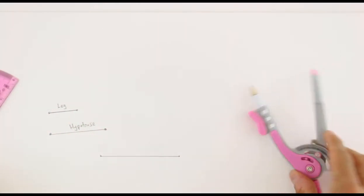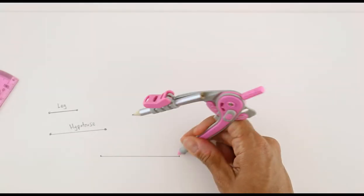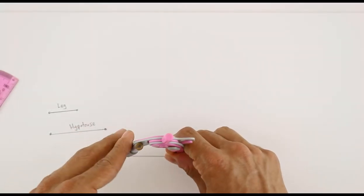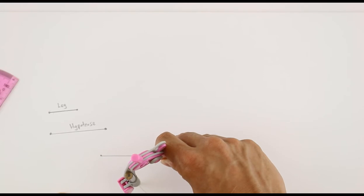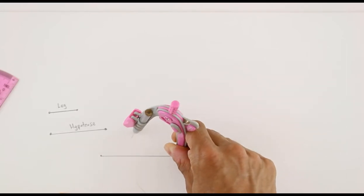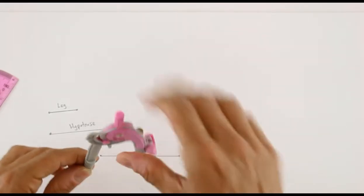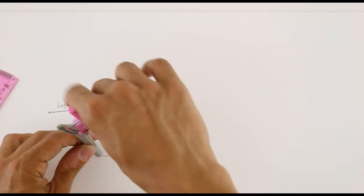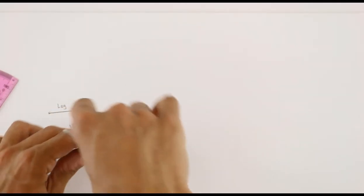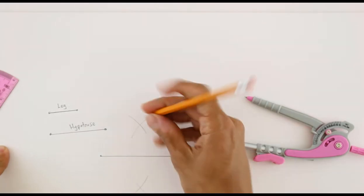I can start by constructing a random segment. I would go ahead and make it a pretty decent size length and construct the segment bisector of that segment. Of course, the segment bisector will give us a 90 degree angle.